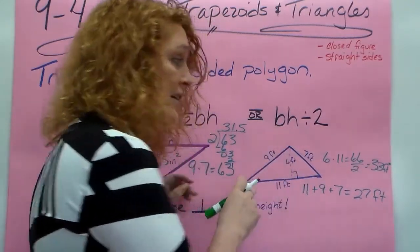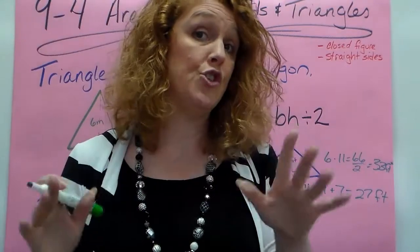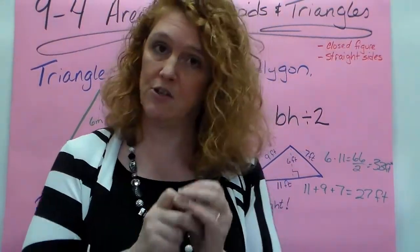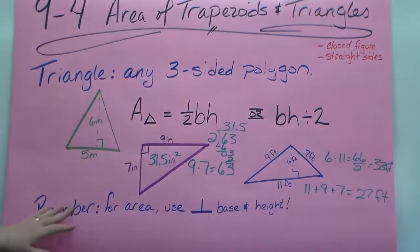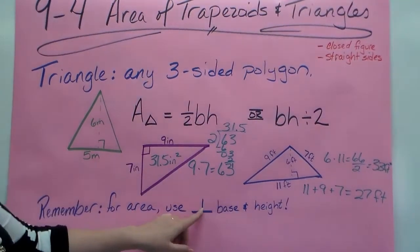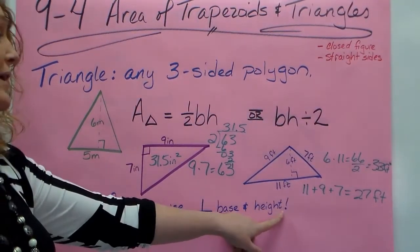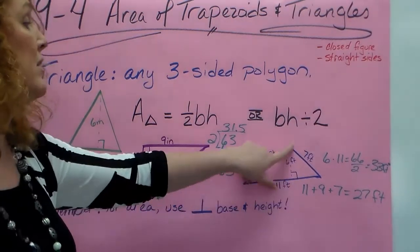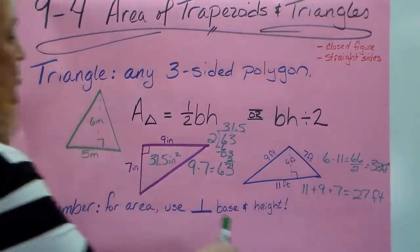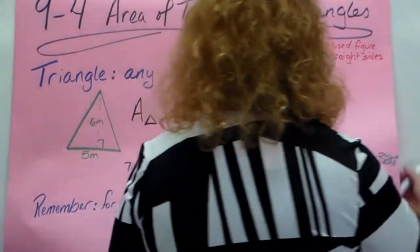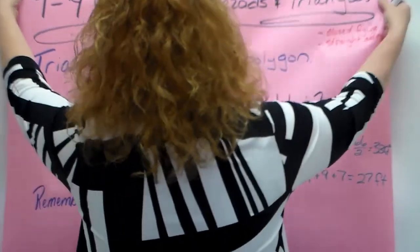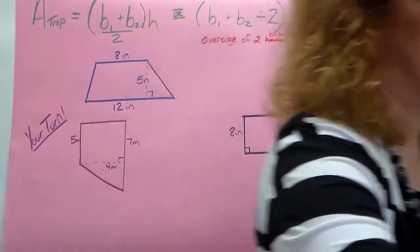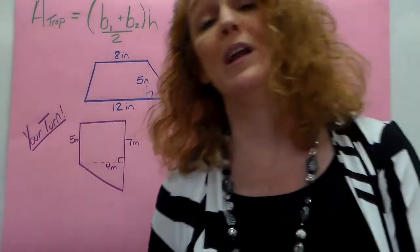How'd you do? Are you comfortable with this? Remember for area you want to use the lines that are perpendicular to the base and the height. You want to make sure you've got perpendicular lines so that you're grabbing the right two numbers. For the most part all they're going to give you is the two numbers, but in case they're getting tricky and when I test you, you have to know the difference.